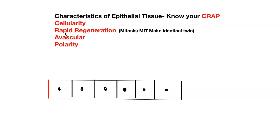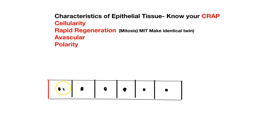R stands for rapid regeneration — we're talking about cell division, about mitosis. MIT: I tell my students that stands for 'make identical twin.' The cell is duplicating itself. This is true — if you cut yourself, a skin wound heals really fast.